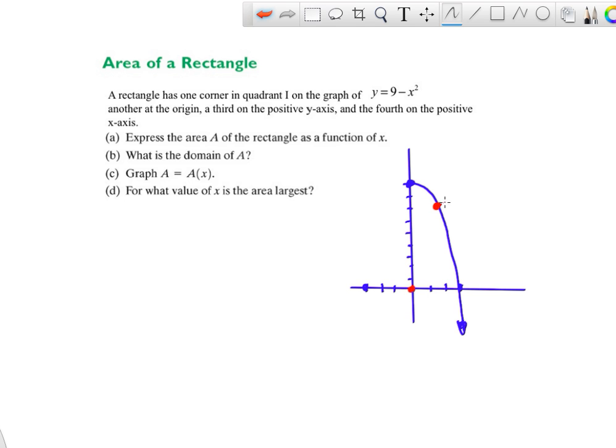And 1 corner on the graph of that thing. So 1 corner on it. 1 at the origin. 1 third on the positive y. So if it's a rectangle, then that has to be horizontal. Let's say it's this one. And then it has to go down and square. So, yeah, it's not a great rectangle, but we'll have to do it. Okay, so there's my rectangle.